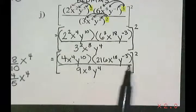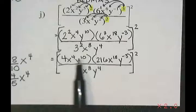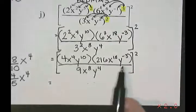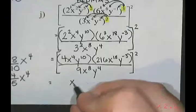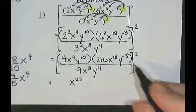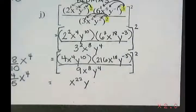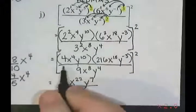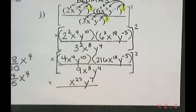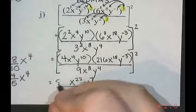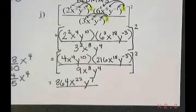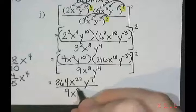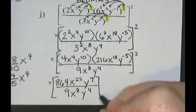So we still need to work on what's inside that big bracket. I'm going to do the multiplication inside, starting with the variable parts. x to the 4 times x to the 18 — we add the exponents — gives x to the 22. y to the 10 times y to the negative 3 — adding — 10 plus negative 3 gives us y to the 7. Then 4 times 216 on my calculator is 864. So I have 864x to the 22, y to the 7, divided by 9x to the 8, y to the 4, and this is all still squared.